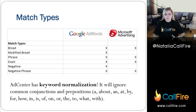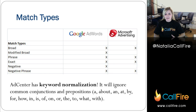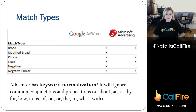Both have phrase match. Both have exact match. There's a big difference in negative match. AdWords calls them negatives, AdCenter occasionally calls them exclusions. But AdCenter only has negative phrase match, so everything is listed as a phrase. It doesn't have exact phrase match, and that can be a big problem. Not having a negative exact match can really mess up your campaigns if you don't know that there's that difference.